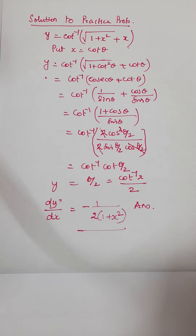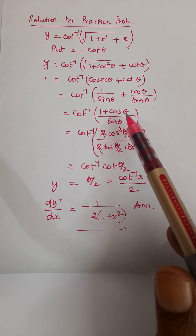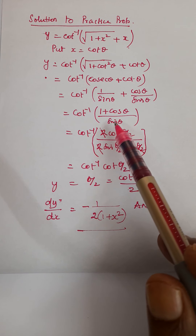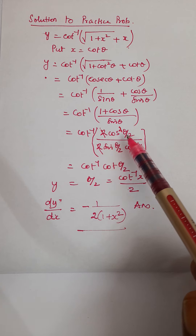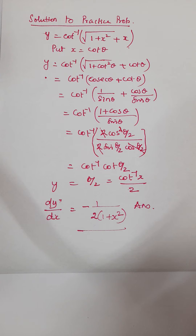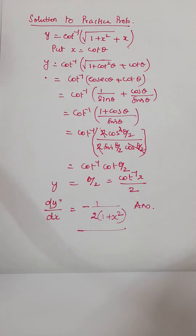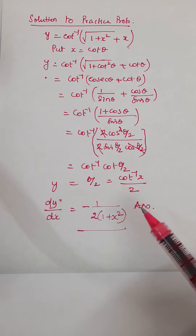So here we have to remove the root. To remove the root, substitute x is equal to cot theta. Substituting cot theta and simplifying, you finally arrive at cot inverse of 1 plus cos theta divided by sin theta. Now 1 plus cos theta equals 2 cos squared theta by 2, and sin theta by the half angle formula is 2 sin theta by 2 into cos theta by 2. The cos terms and the 2s cancel, giving cot inverse of cot of theta by 2, which becomes theta by 2, and then cot inverse x by 2.